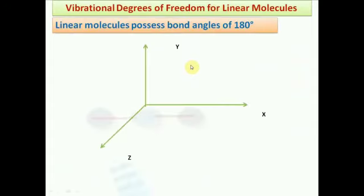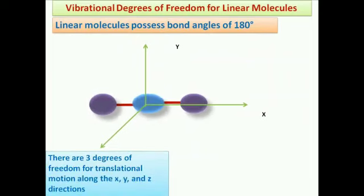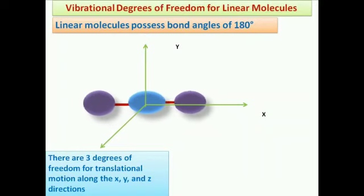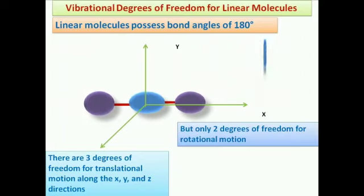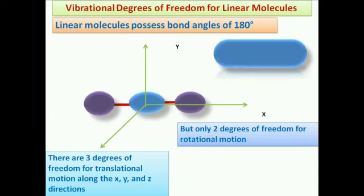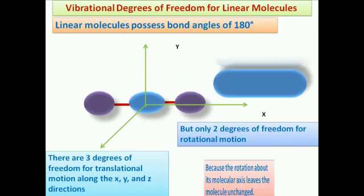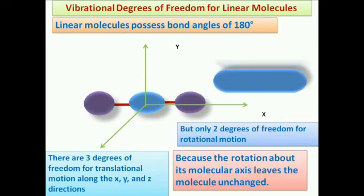Next, vibrational degree of freedom for a linear molecule. Like a nonlinear molecule, a linear molecule also has three degrees of translational motion — along the x-axis, y-axis, and z-axis. But if we consider x as the molecular axis, then the linear molecule has only two degrees of freedom for rotational motion: one along the y-axis and another along the z-axis.